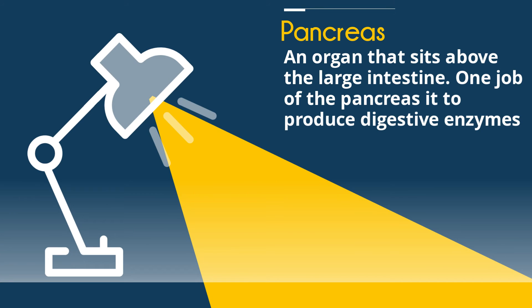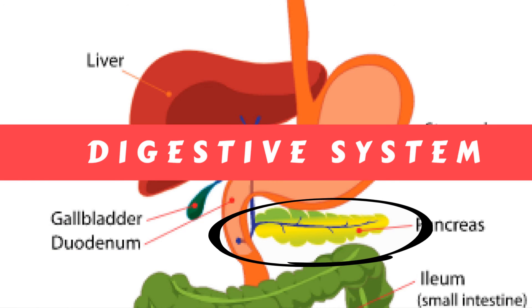And finally, the Pancreas, an organ that sits above the large intestine. One job of the pancreas is to produce digestive enzymes.